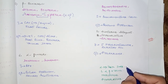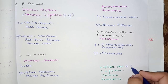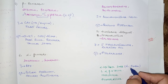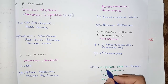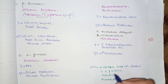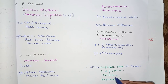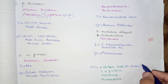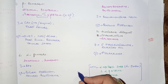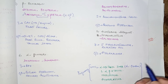Drugs used in pregnancy include alpha-methyldopa, which is an alpha-2 receptor agonist that reduces norepinephrine release and lowers blood pressure — a very important and commonly used drug in pregnant ladies. Labetalol, a mixed alpha-beta blocker, is also commonly used in hypertensive emergencies in pregnancy. Nifedipine (calcium channel blocker) and hydralazine (arterial dilator) are also indicated. ACE inhibitors and ARBs are contraindicated in pregnancy as they are teratogenic and fetotoxic.